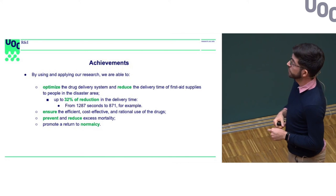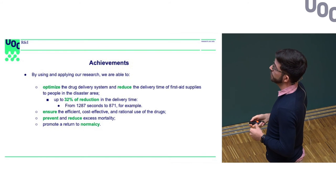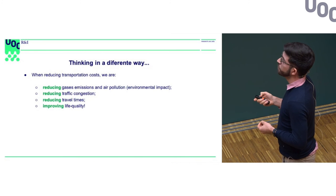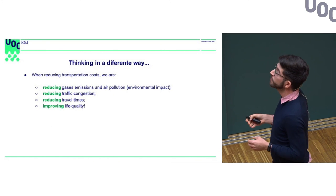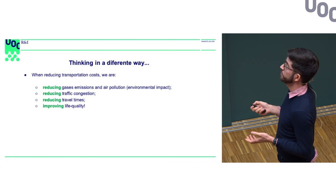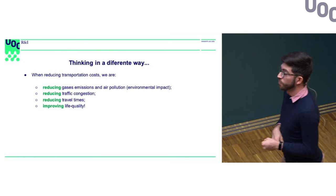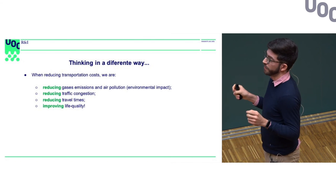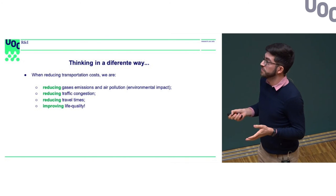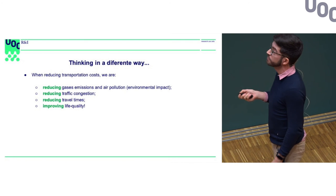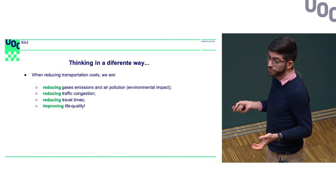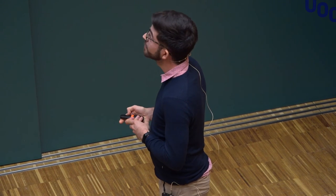Returning to the topics from the first slide, by doing this we ensure the efficient, cost-effective, and rational use of drugs in disaster situations, preventing excess mortality and promoting a return to normalcy. Since it is a transportation problem, reducing transportation time also reduces gas emissions and air pollution. Thinking about urban centers, we reduce traffic congestion and travel times for passengers, ultimately improving overall quality of life. That's all — thank you.